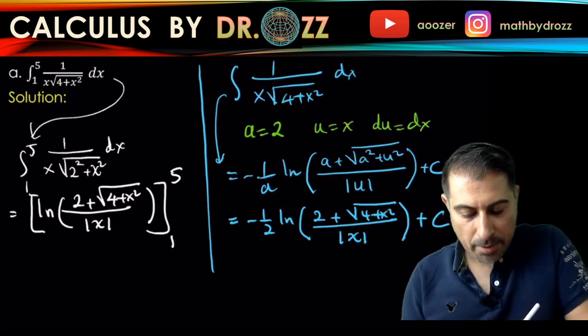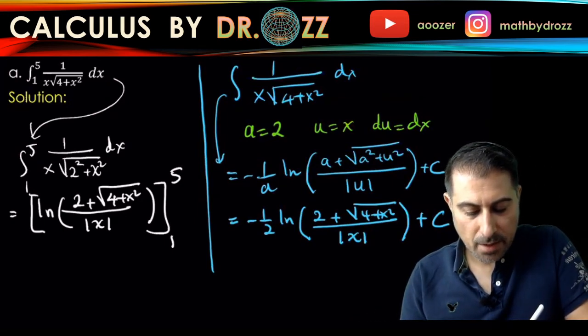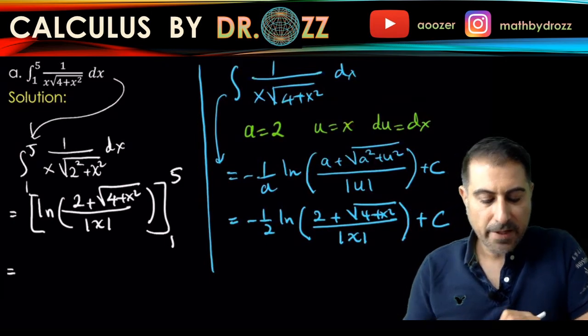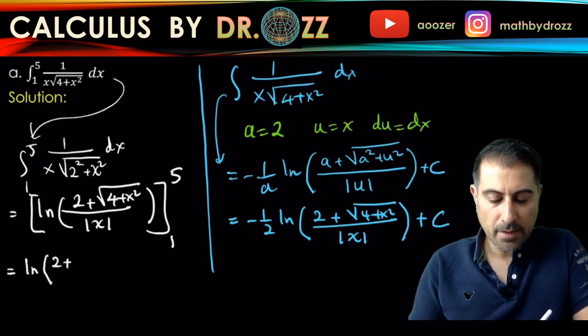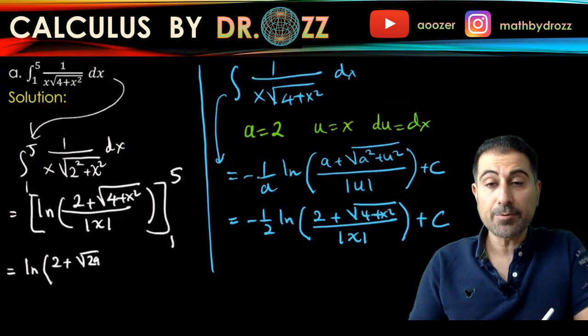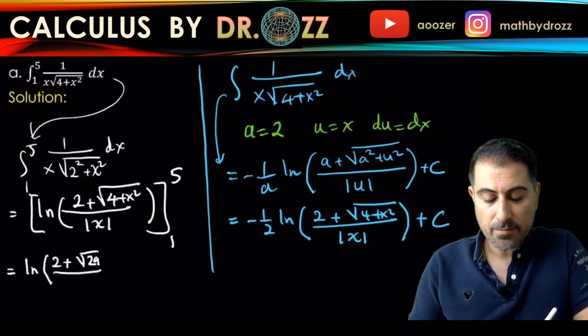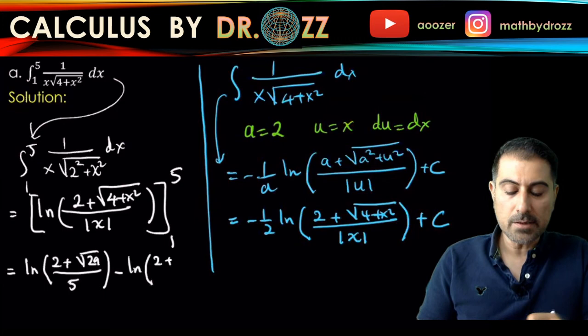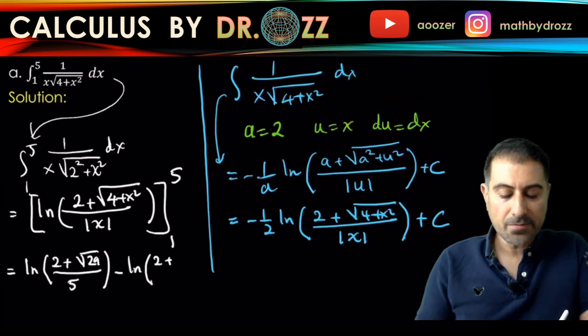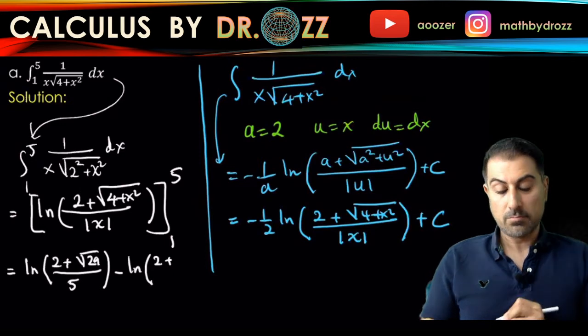And now I'm going to plug in the upper limit. Ln of two plus five squared is 25. So 29 divided by absolute value of five is just five. Minus Ln of two plus, when you plug in one, that makes the inner side of the radical five, radical five divided by one.